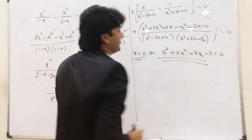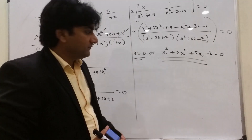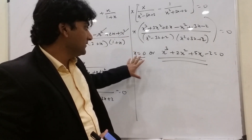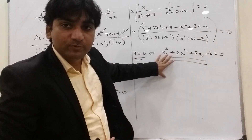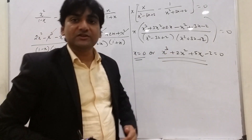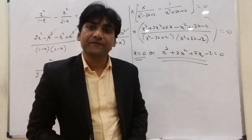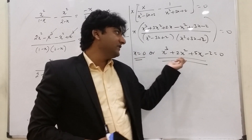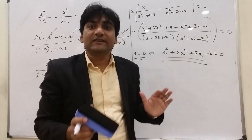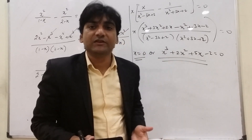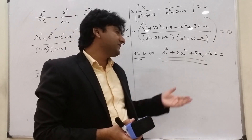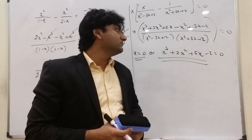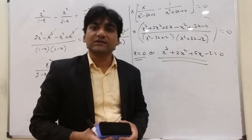So either x = 0 (one solution), or we solve the cubic x³ + 2x² + 5x − 2 = 0. A cubic equation can have 1 or 3 real roots. We need to check how many real solutions this cubic has between −1/2 and 1/2.